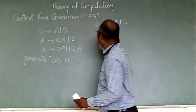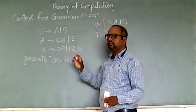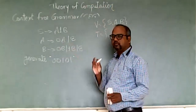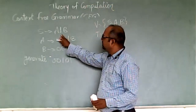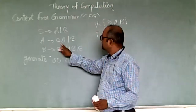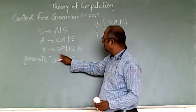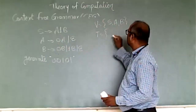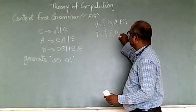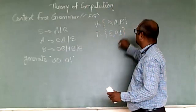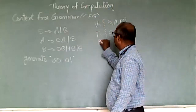Now the second component: terminals. Terminals are represented with small alphabets or digits. So here zero is a terminal, one is a terminal, and epsilon is a terminal. So epsilon, zero, and one are the three terminals we are having in this grammar.